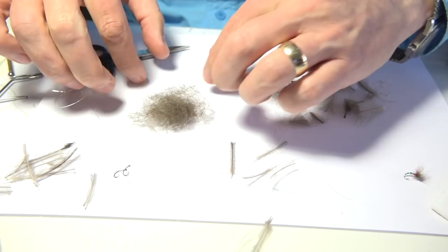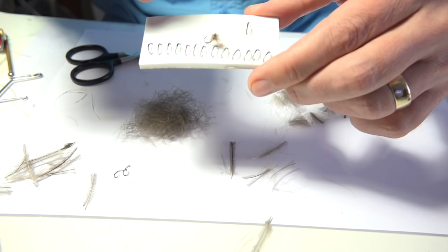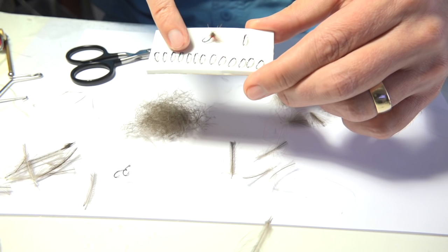Now the fly I'm going to be tying is an emerger midge pattern. I'll just come in a bit closer. The type of bodies I like to tie, in this case here, I've got the pearl, I've got the yellow oil, I've got the quill body.